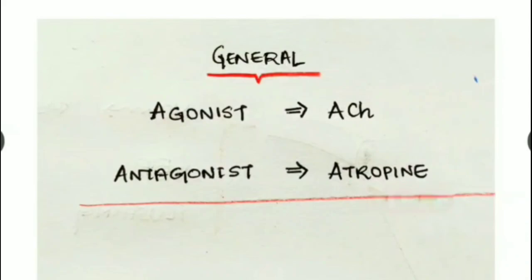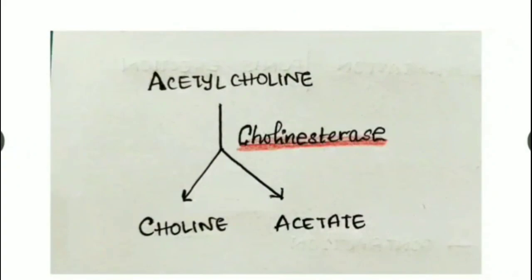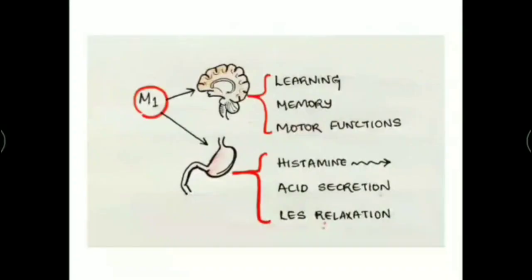In general, regarding the cholinergic system, the agonist is acetylcholine and the antagonist is atropine. Regarding metabolism, acetylcholine is broken down by the cholinesterase enzyme into choline and acetate.